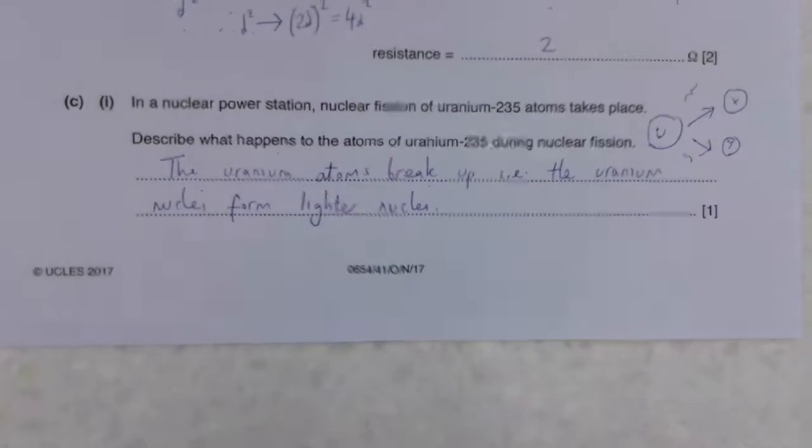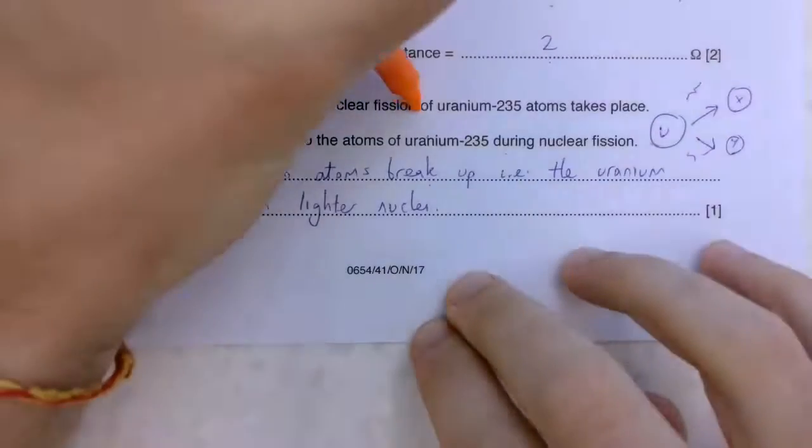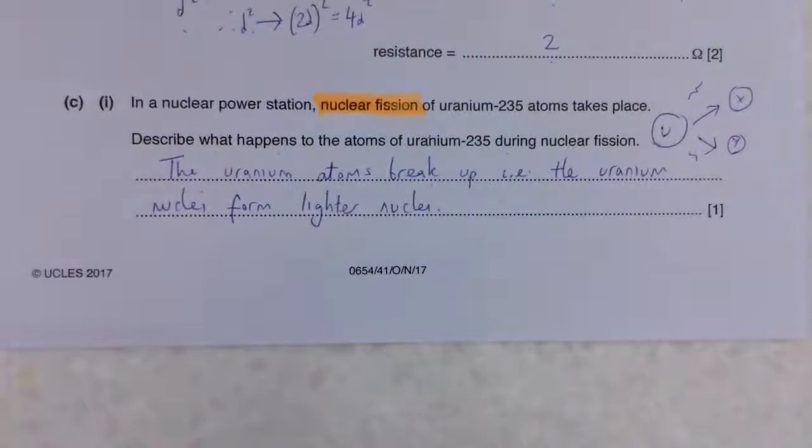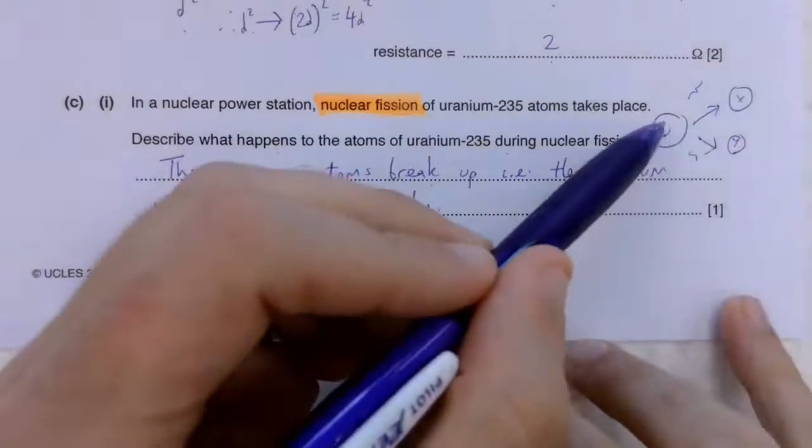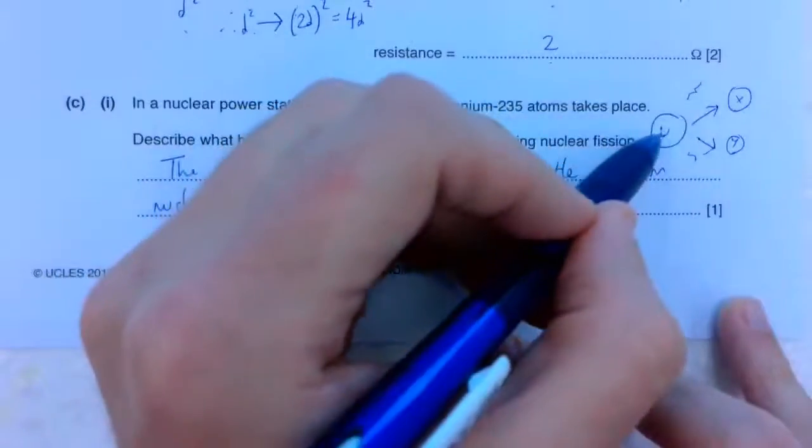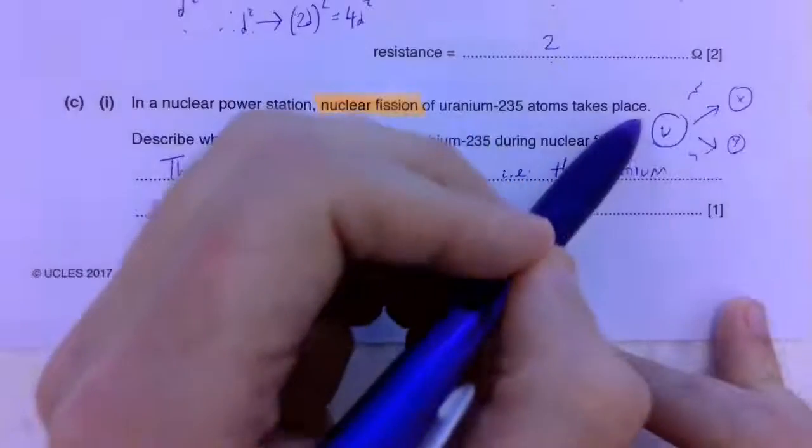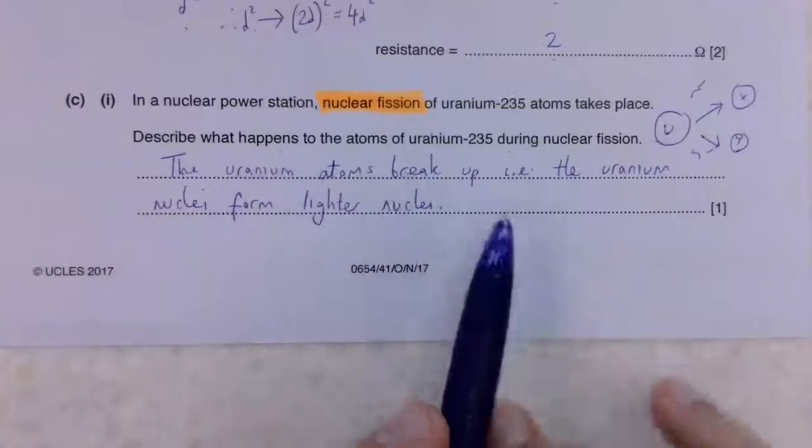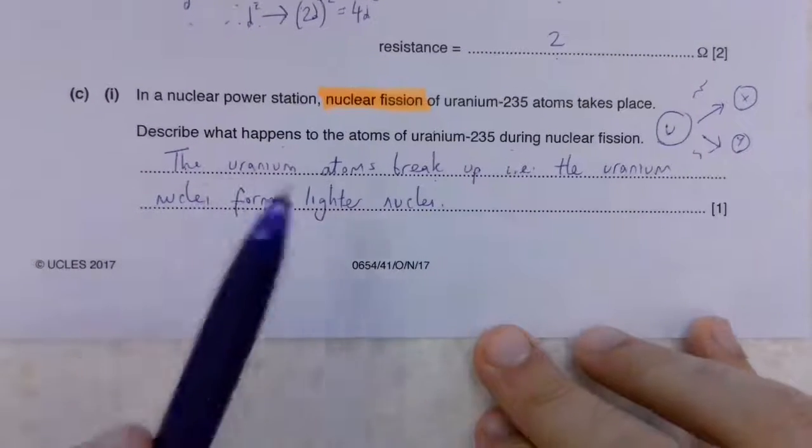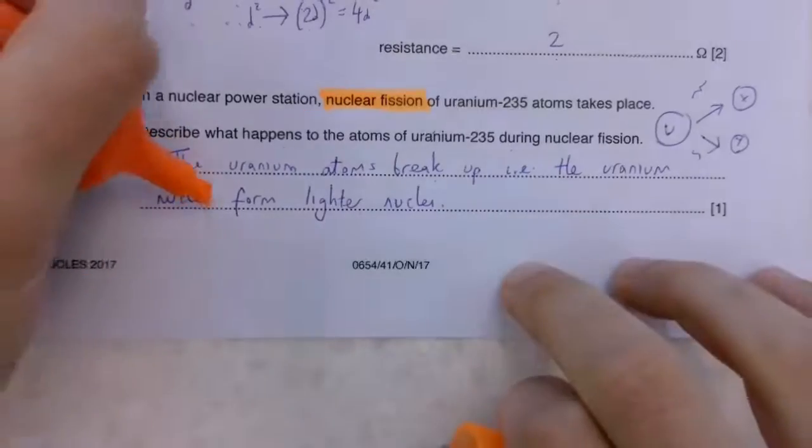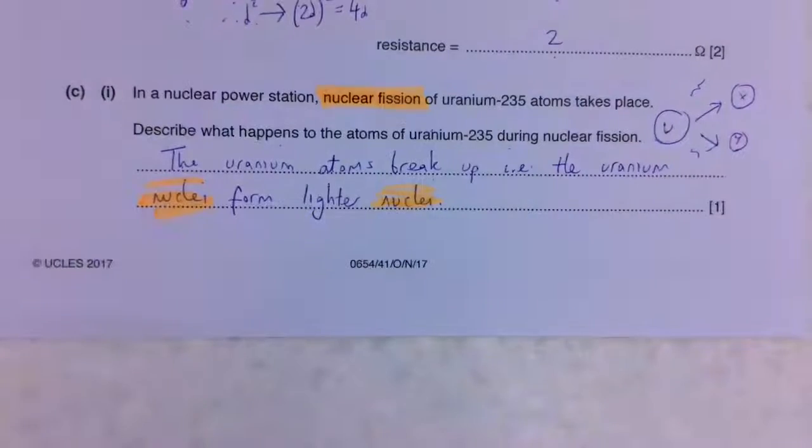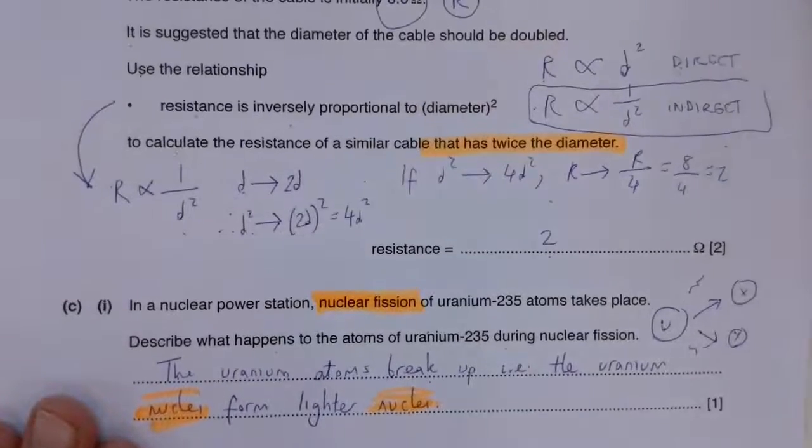We've got a nuclear power station. We've got a nuclear fission of uranium-235. It's basically saying what happens? Well, in fission is this process here. Big thing U becomes X and Y. Notice it's a heavy nucleus. It's splitting into 2 light nuclei. The uranium atoms break up, which means the uranium nuclei form into lighter nuclei. Be careful. In this kind of question, they wanted the word nucleus. You need to make sure you're talking about the nucleus.